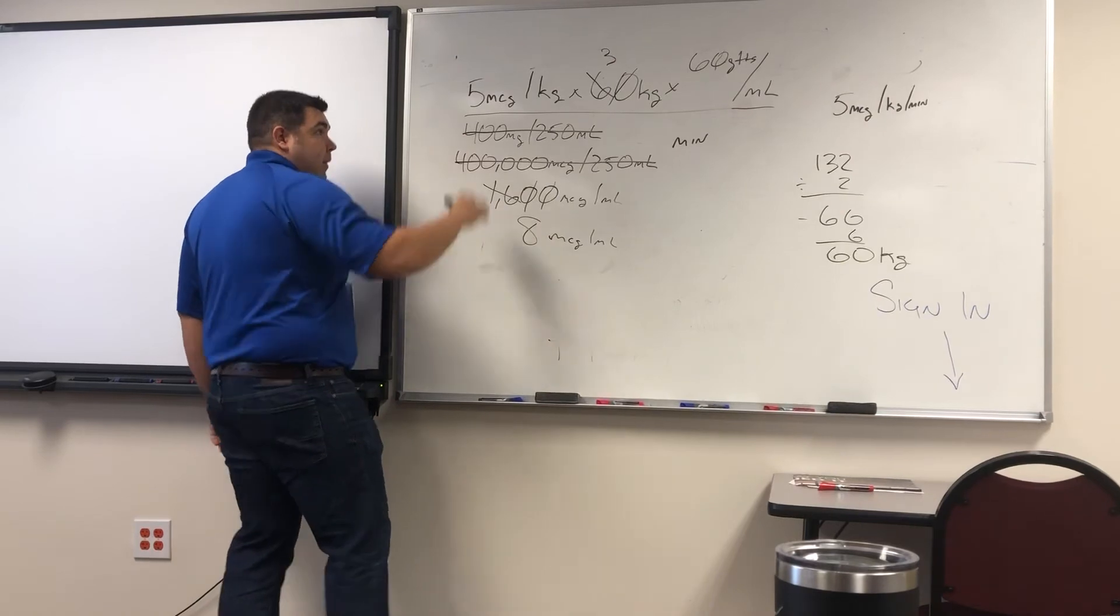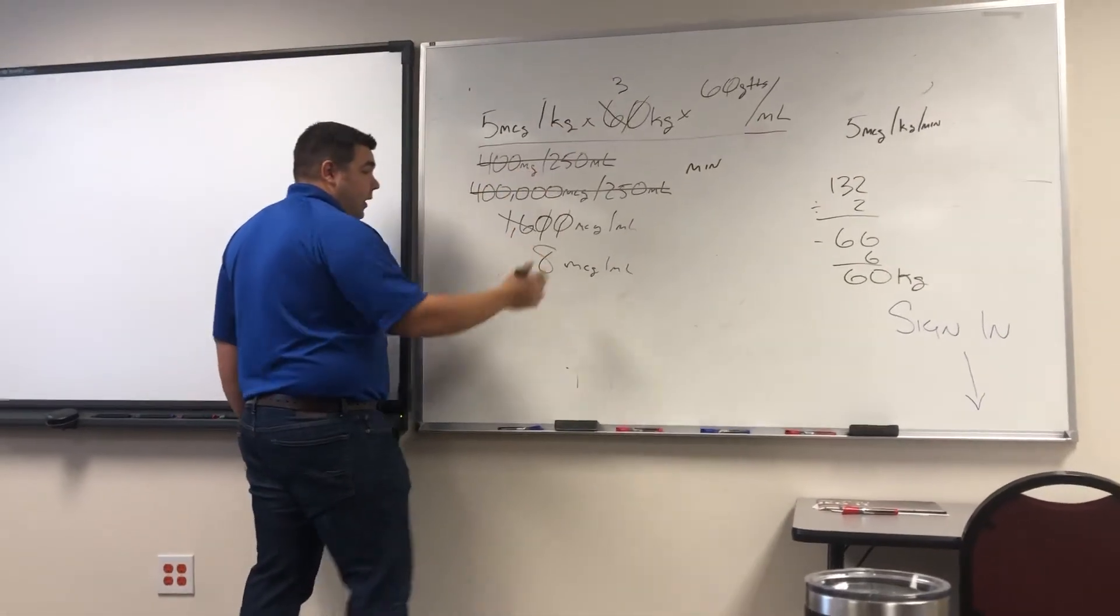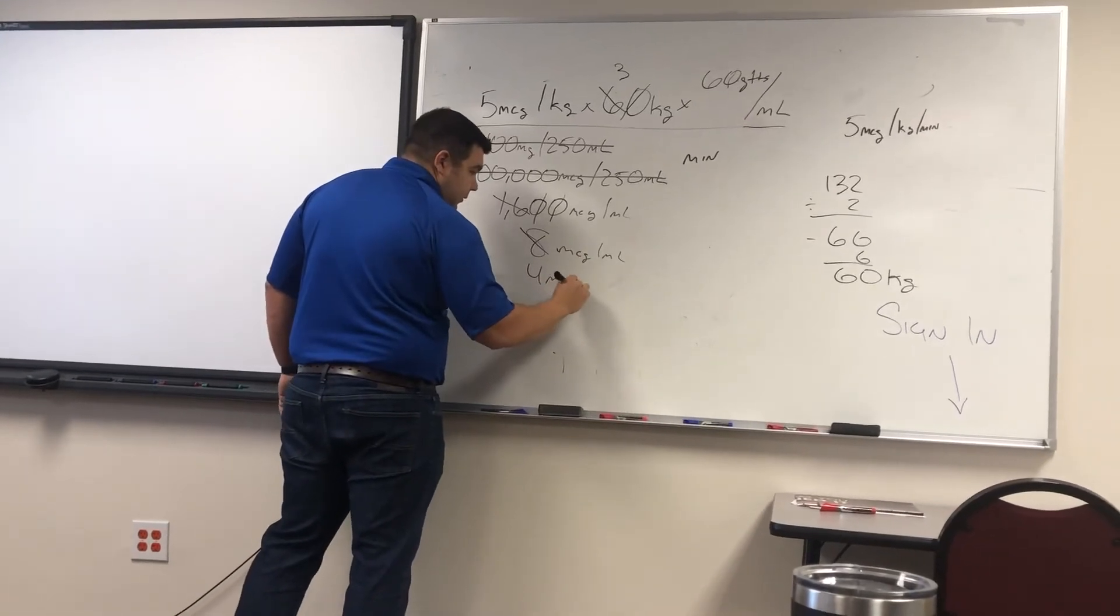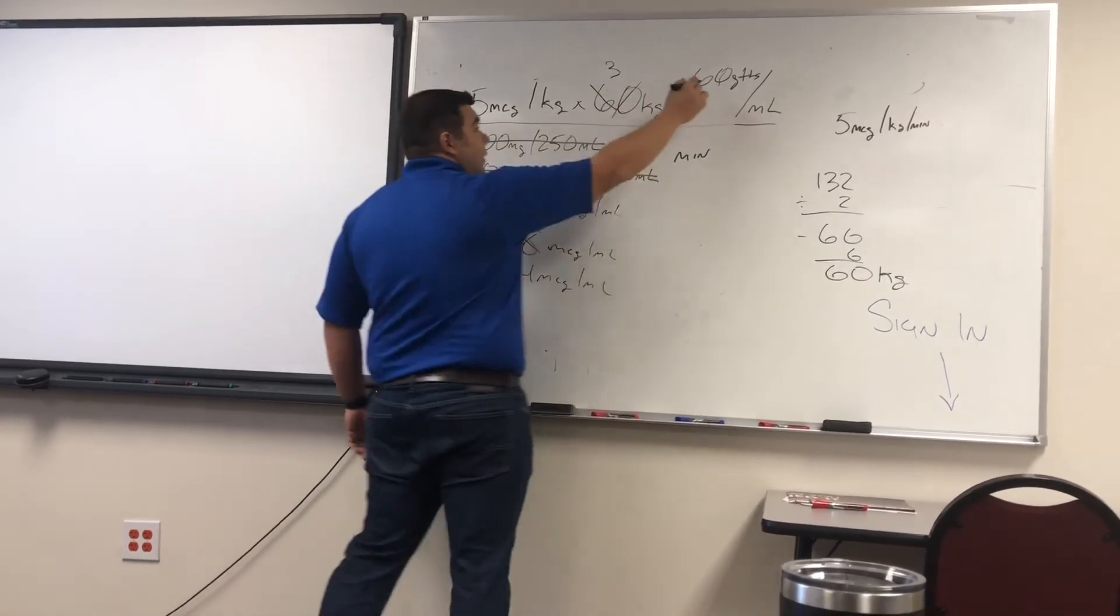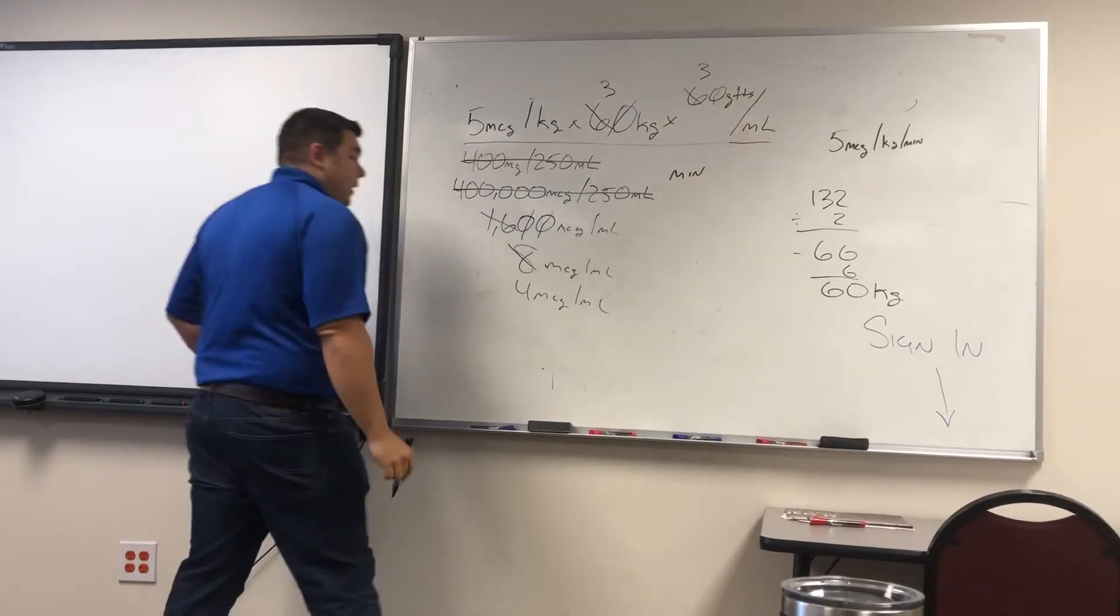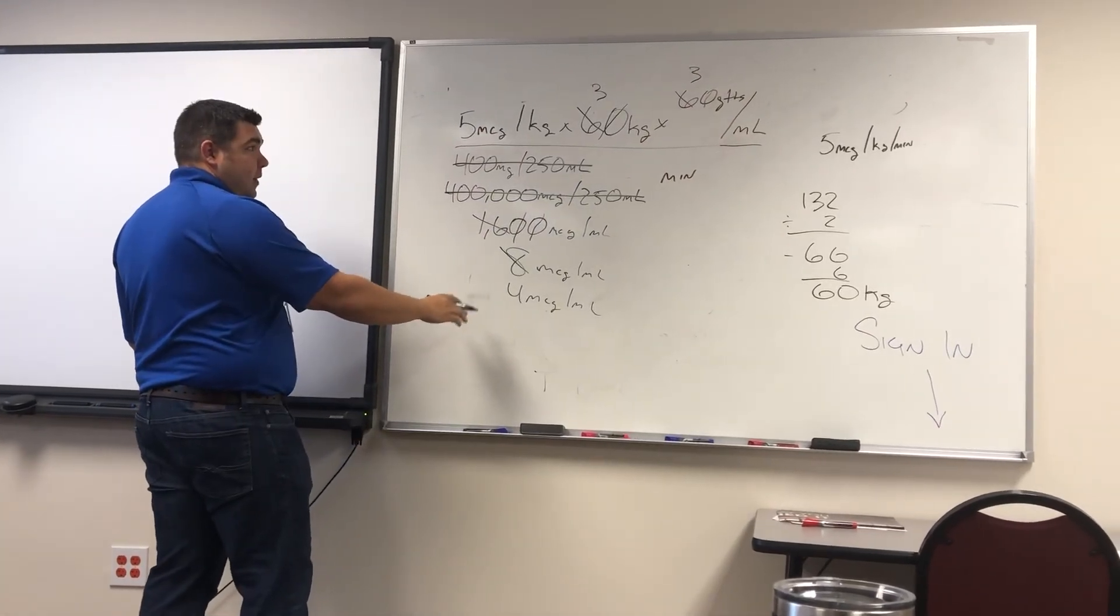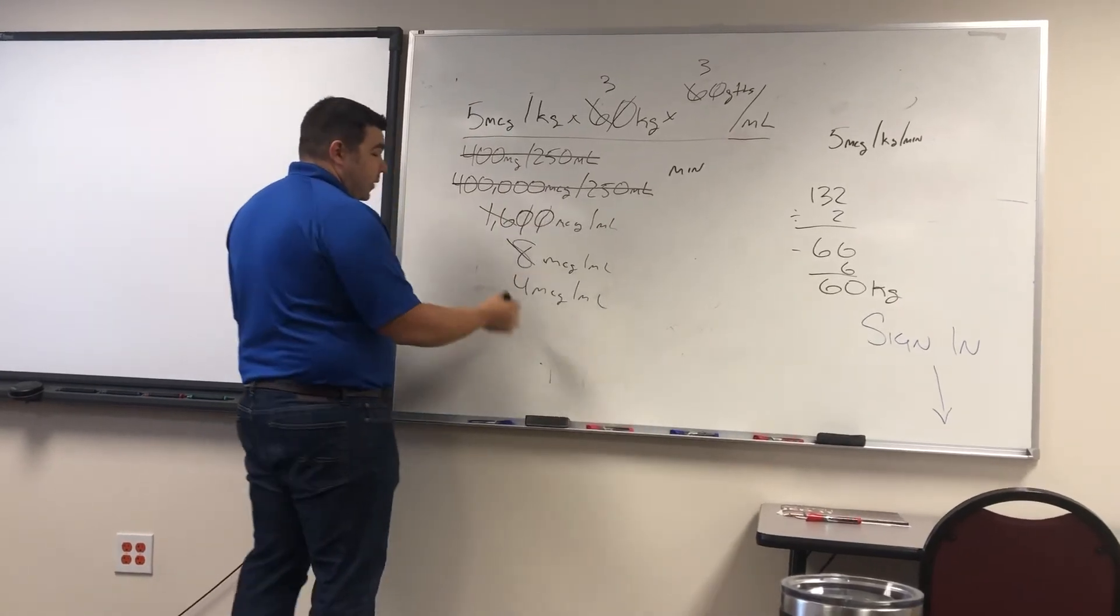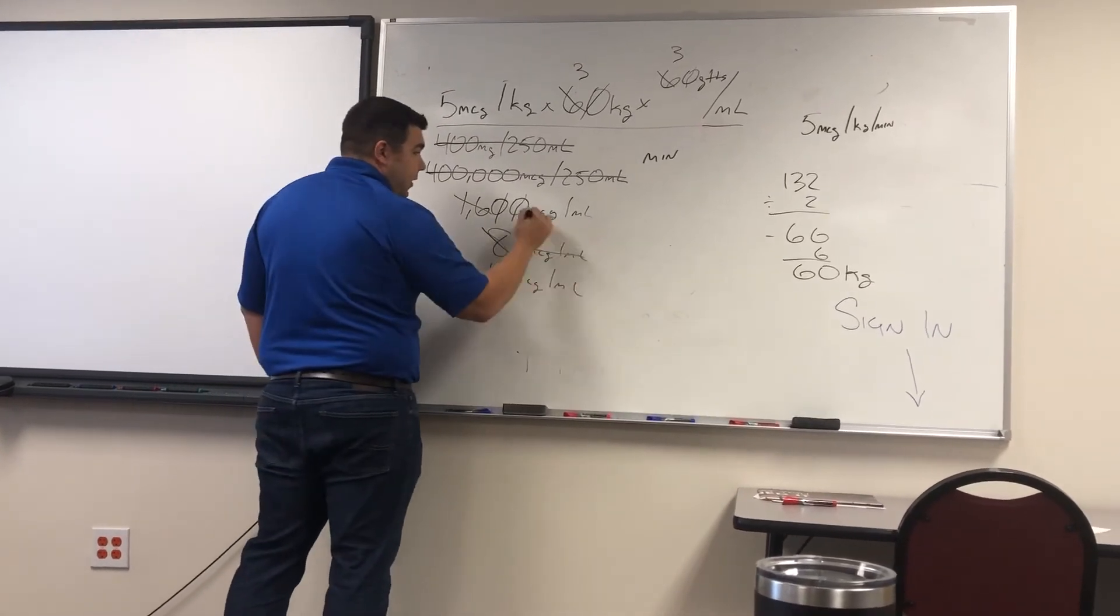Do I still have an even number on the bottom? Yes. And still have an even number on top? Yes. So 8 divided by 2 is 4. 6 divided by 2 is 3. Now, do I have an even number on the bottom? Yes. But do I have any even numbers on top? No. So we'll have to do the math. But before we do that, let's get rid of some of these variables here.